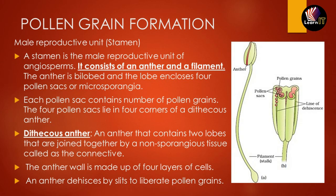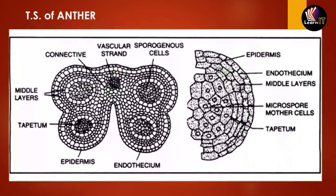The anther wall is made up of four layers of cells. The anther splits by slits to liberate pollen grains. In the transverse section of the anther, we can see a bi-lobed structure with the middle layer, tapetum, epidermis, and endothecium — these are the walls or outer coverings of the anther. In between we can see sporogenous cells.